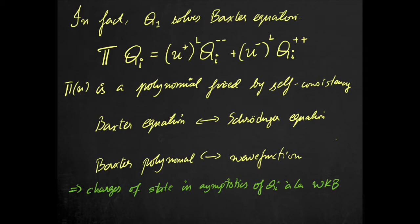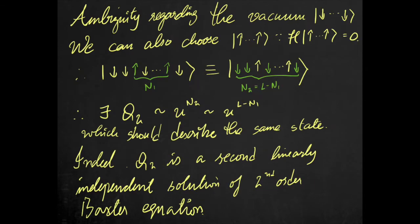You might have noticed an ambiguity in the definition of the ground state. I chose all spins down, but I could equally well have chosen all spins up. Indeed, in this picture, N1 spin-up excitations in a sea of spin-downs translates to L-N1 spin-down excitations in a sea of spin-ups. There is another Baxter polynomial, Q2, with asymptotics u^(L-N1) that describes this state. It is a second linearly independent solution of the Baxter equation.